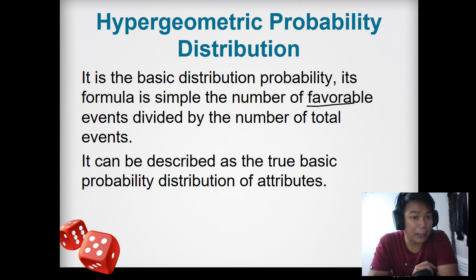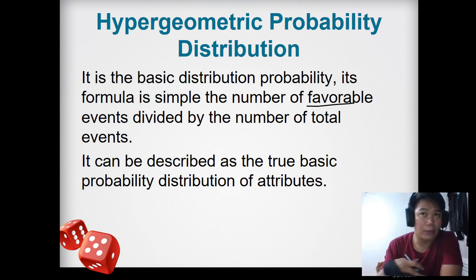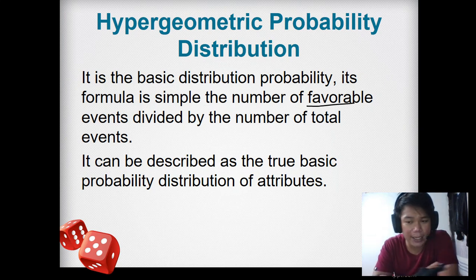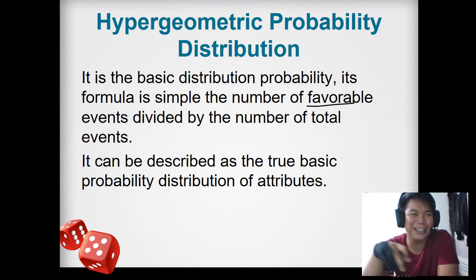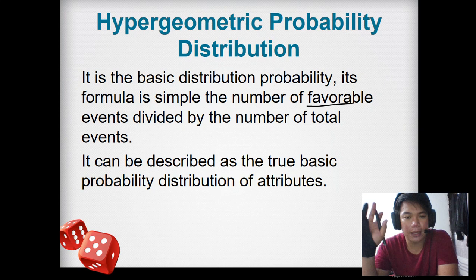For example, in the 3-point game, there are around 5 balls per station. When Stephen Curry shoots, how many did he make versus the total number of shots, out of 25? That's favorable versus total outcomes. It can be described as the true basic probability distribution of attributes.